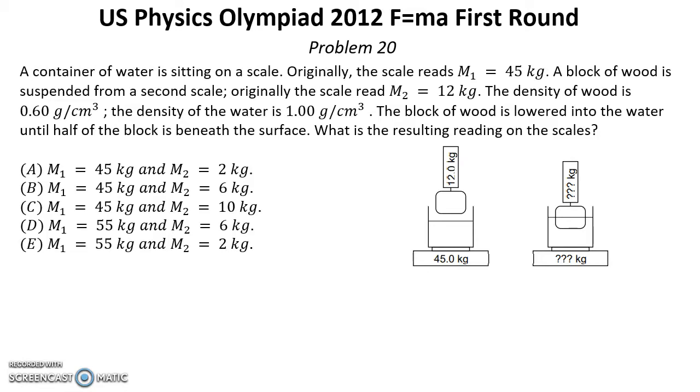A container of water is sitting on a scale. Originally the scale reads M1 equal 45 kg. A block of wood is suspended from a second scale. Originally the scale reads M2 equal 12 kg.